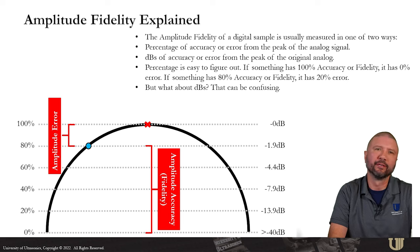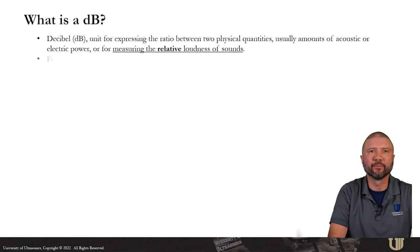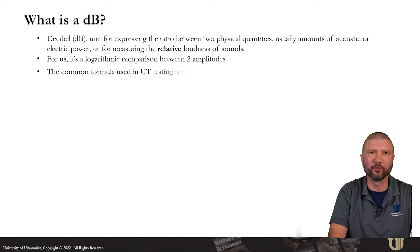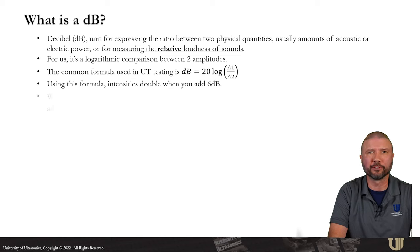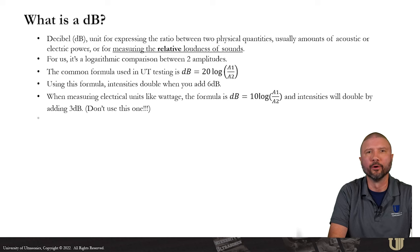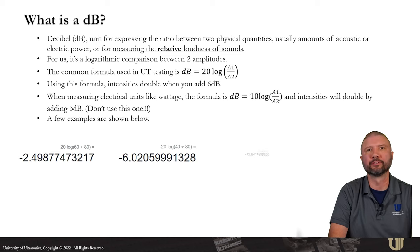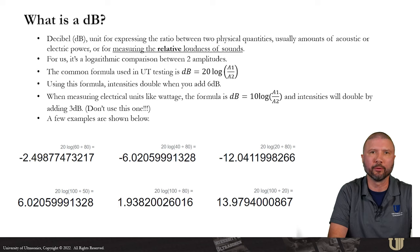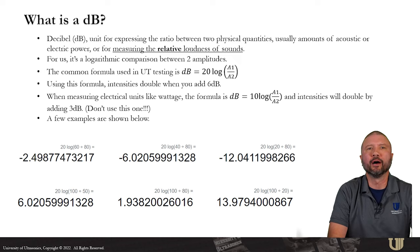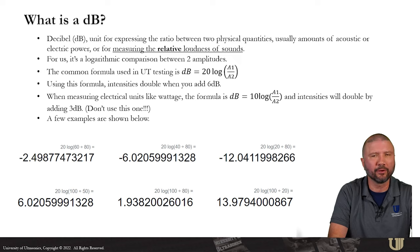But what about dBs? That can be a little bit confusing. A dB or decibel is a unit for expressing the ratio between two physical quantities, usually amounts of acoustic or electric power or for measuring the relative loudness of sounds. For us, it's simply a logarithmic comparison between two amplitudes. The common formula used in UT testing is 20 log amplitude 1 divided by amplitude 2 equals dB. Using this formula, we know that the intensities double when we add 6 dB or they cut in half when we remove 6 dB.